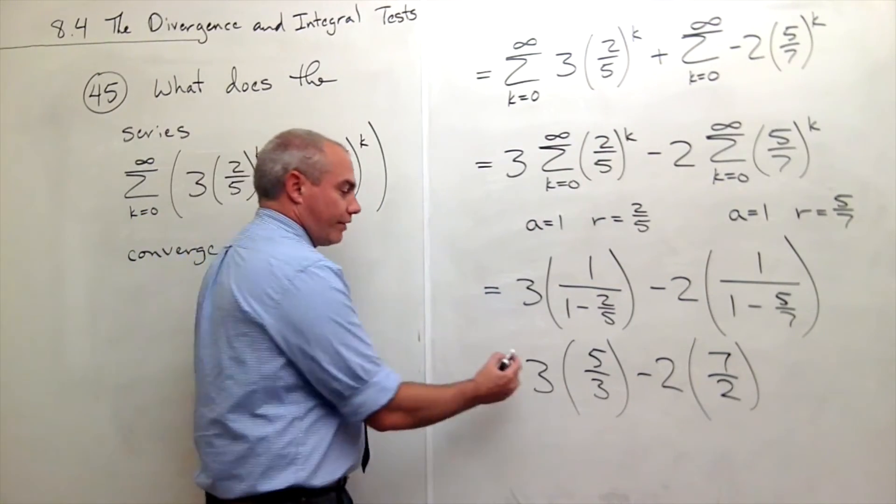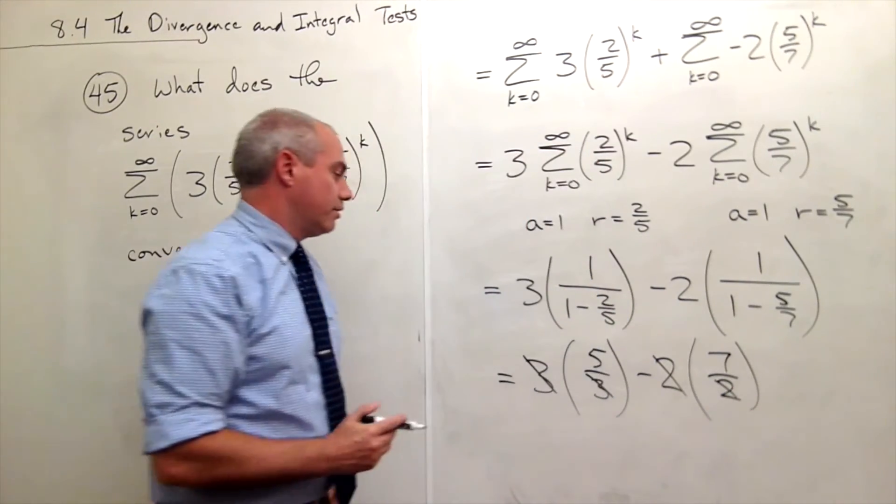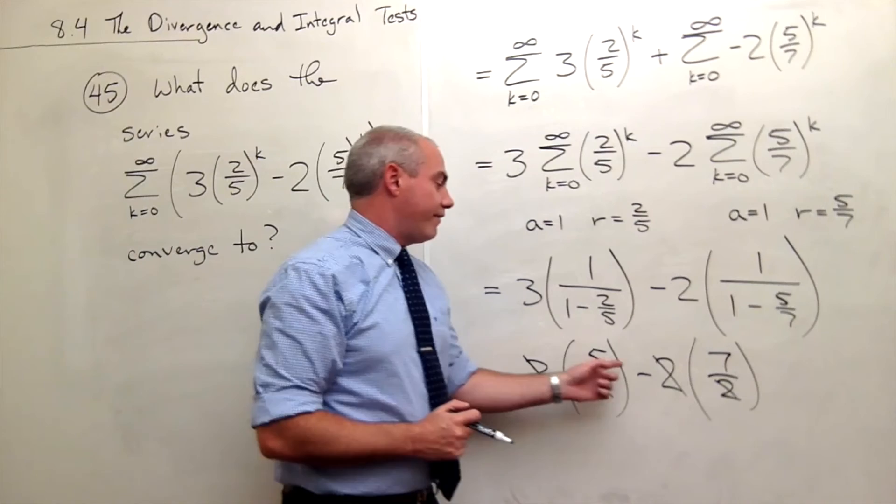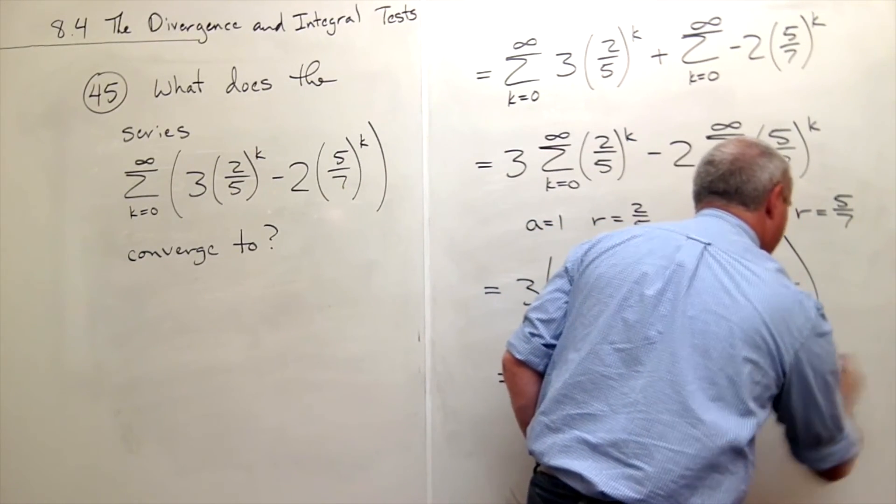Now notice I have a three and a three. They cancel. I have a two and a two. They cancel. And what I'm left with is five minus seven, which is negative two.